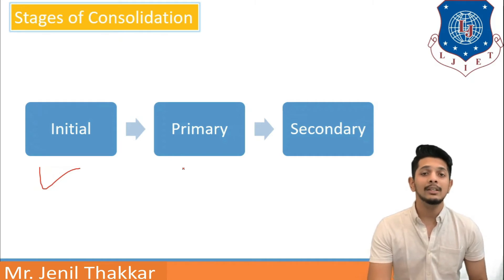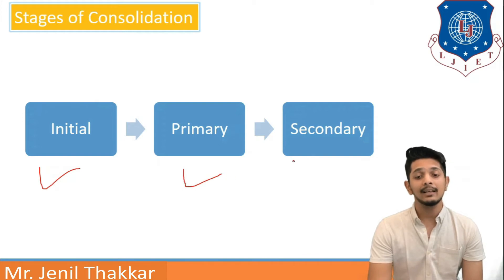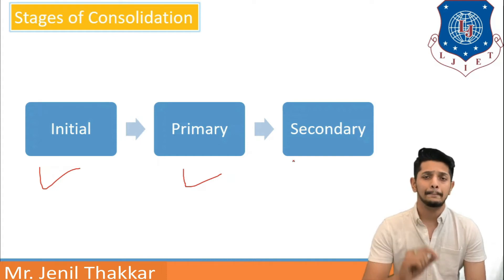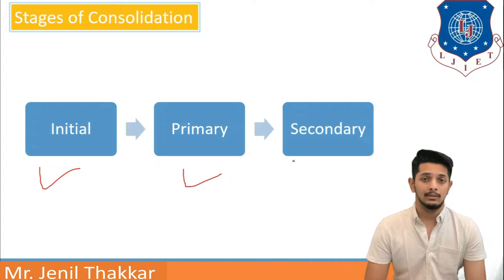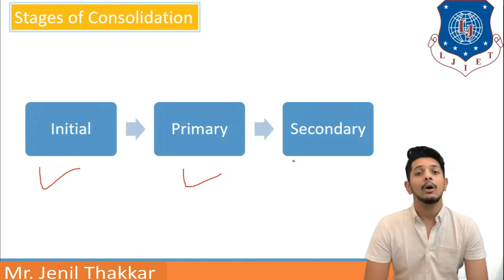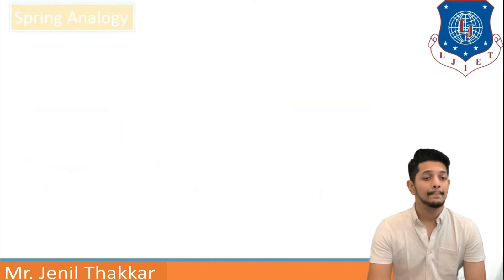After initial consolidation or immediate settlement, further reduction in volume of the soil mass constitutes primary consolidation. The reduction in volume of soil mass continues at a slower rate. Furthermore, after expulsion of air voids or after primary consolidation, further decrease in volume of soil mass is known as secondary consolidation or creep settlement.